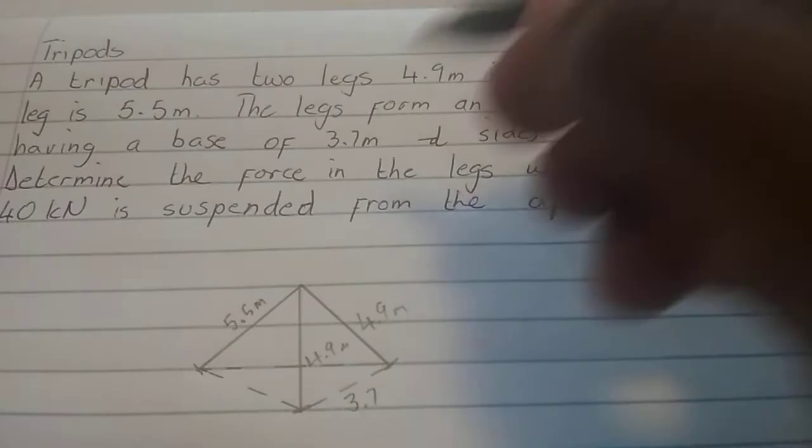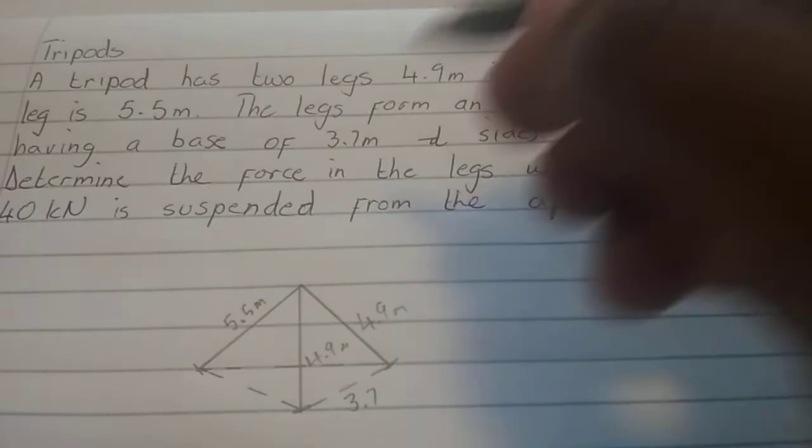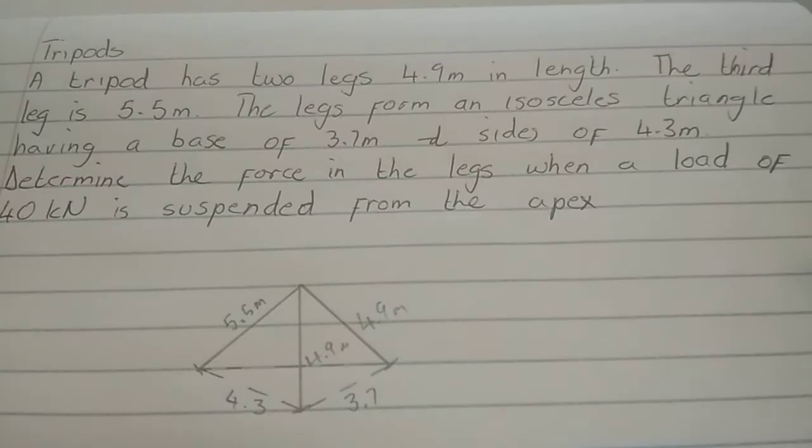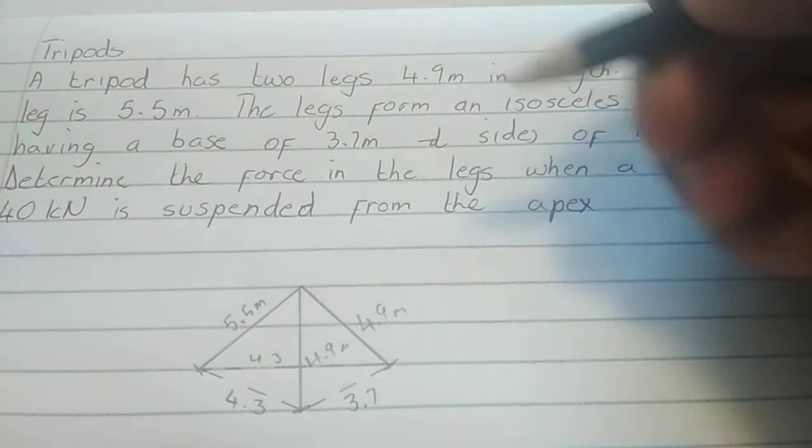So this one is the 3.7. Remember that's at the bottom. And that's 4.3. Likewise, this other one here is 4.3. That's at the bottom.